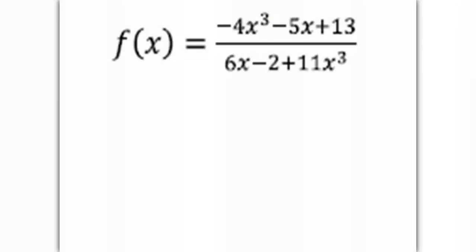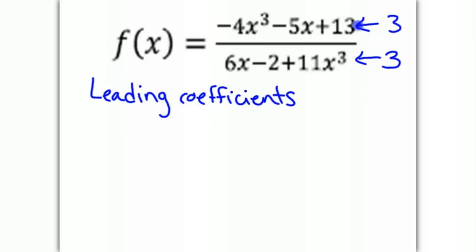we have our first polynomial, degree 3. Our second polynomial is also degree 3. So we look at our leading coefficients. Now, the leading coefficient of the first one is going to be negative 4, and the leading coefficient of our second one is positive 11. So we will have a horizontal asymptote at y equals negative 4 over 11.